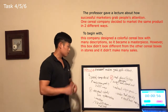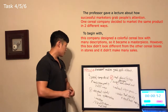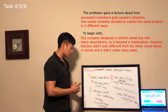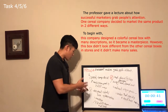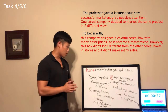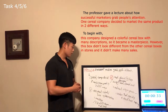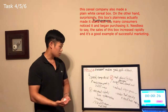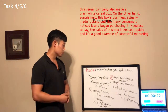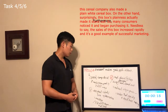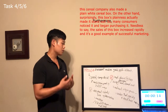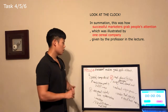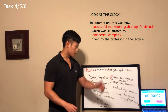The professor gave a lecture about how successful marketers grab people's attention. One cereal company decided to market the same product in two different ways. To begin with, this company designed a colorful cereal box with many descriptions, so it became a masterpiece. However, this box did not look different from the other cereal boxes in stores, so it did not make many sales. Furthermore, this cereal company also made a plain white cereal box. On the other hand, surprisingly, the box's plainness made it stand out, so many consumers noticed it and began purchasing it. Needless to say, the sales of this cereal box increased rapidly, and it is a good example of successful marketing. In summation, this was how successful marketers grabbed people's attention, which was illustrated by one cereal company, given by the professor in the lecture.